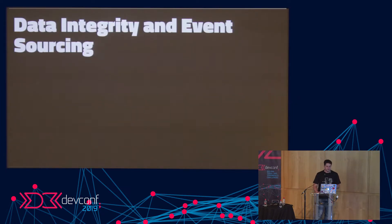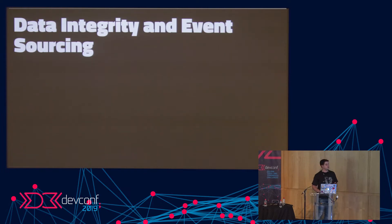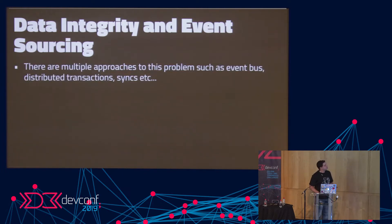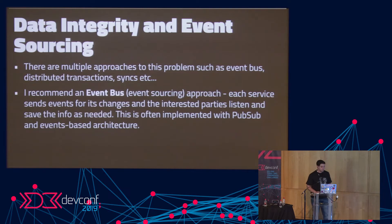One problem is we've removed the foreign key relation — so how do we ensure data integrity? We don't want new orders referencing products that no longer exist or are out of stock. There are many approaches: distributed transactions, syncing, and the event bus. Generally I'd recommend the event bus or event sourcing approach — each service sends events for its changes, and interested parties listen and save the info as needed.